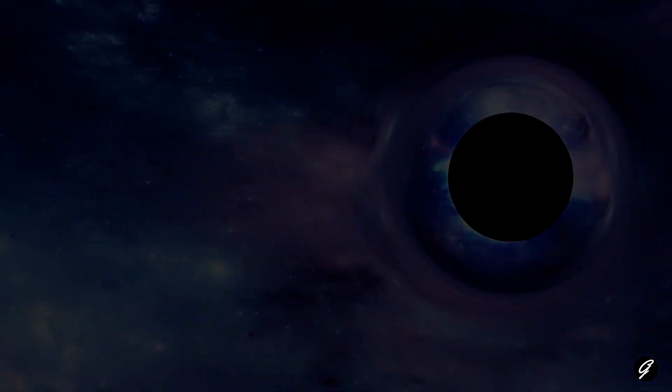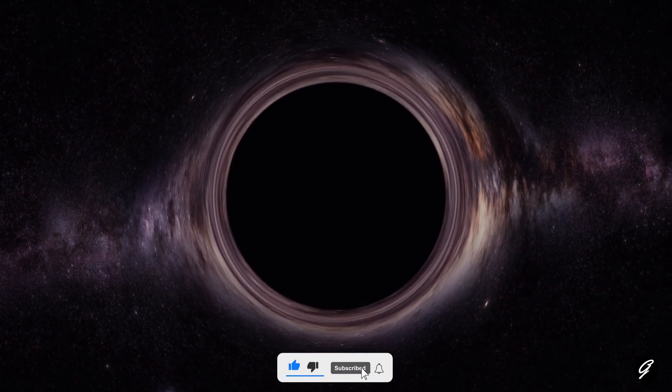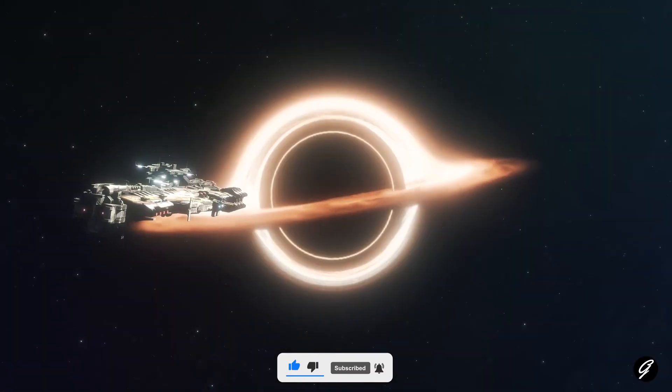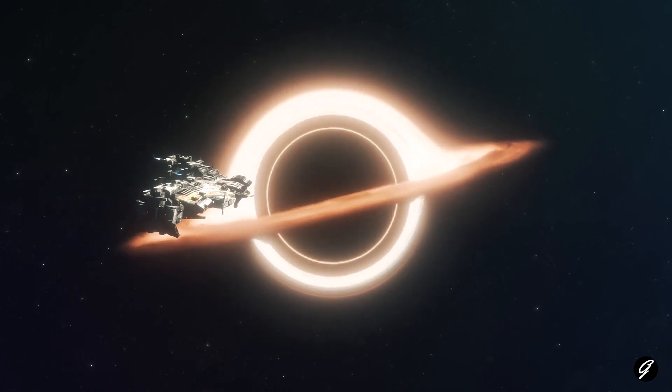Intermediate black holes are more massive than stellar black holes but smaller than supermassive black holes. They have a mass ranging from a few hundred to a few hundred thousand times that of the sun.